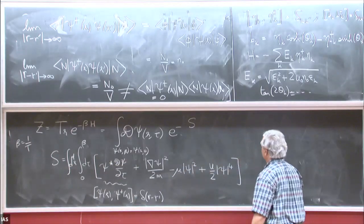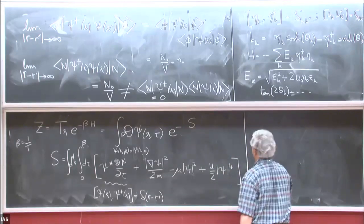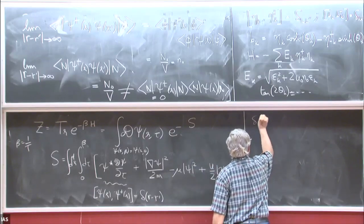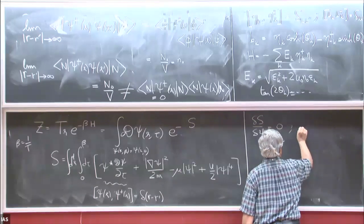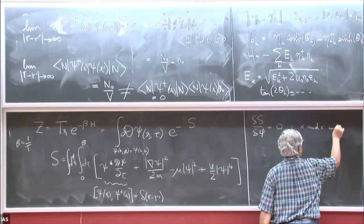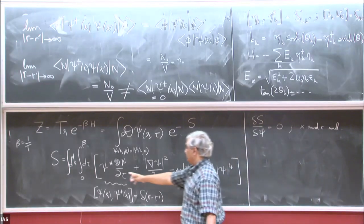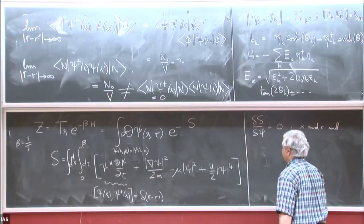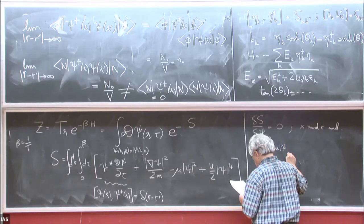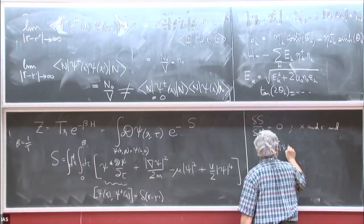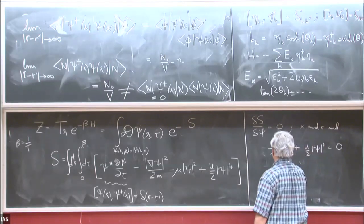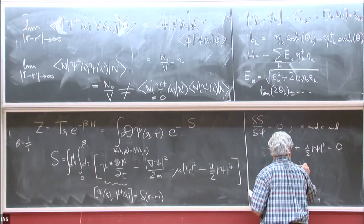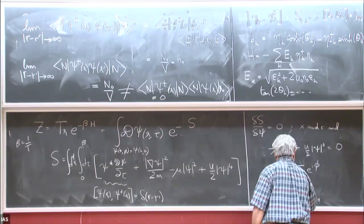So, how do we proceed? We look for the saddle point. We solve d-S/d-psi equals zero, assuming it's space and time independent. Then psi is just a complex number, and only the chemical potential and interaction terms matter: minus mu psi-squared plus U over 2 times psi to the fourth. This tells us that psi equals sqrt(n_naught) times e to the i phi, where n_naught is mu over U. This phi will be exactly the phi from the operator representation. That's the saddle point. Then we want to look at quadratic fluctuations — expand the action around the saddle point.